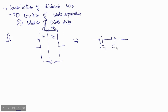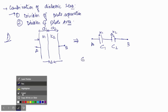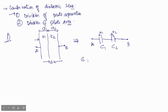Having capacitors C1 and C2, with point A and point B. C1 has dielectric constant k1 and distance d1; C2 has dielectric constant k2. The equivalent capacitance for series connection is C_eq = (C1 × C2) / (C1 + C2).